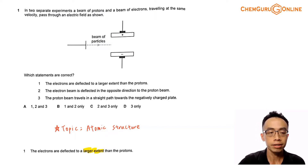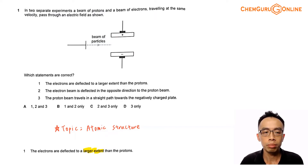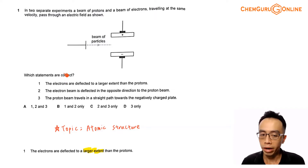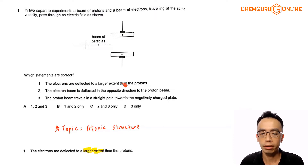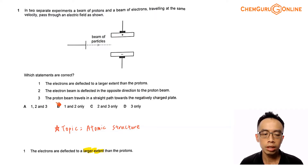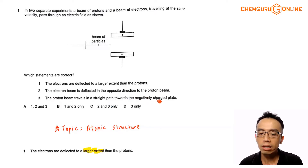Let's take a look at this exercise. In two separate experiments, a beam of protons and a beam of electrons traveling at the same velocity passed through an electric field as shown. Which statements are correct? Statement 1: the electrons are deflected to a larger extent than the protons. Statement 2: the electron beam is deflected in the opposite direction to the proton beam. Statement 3: the proton beam travels in a straight path towards the negatively charged plate.